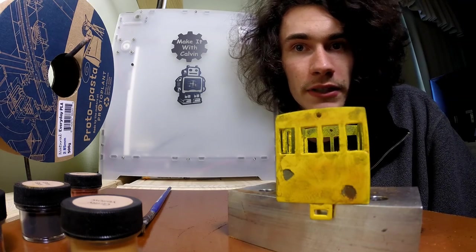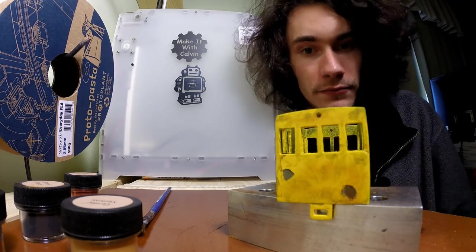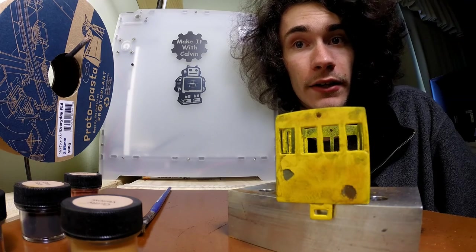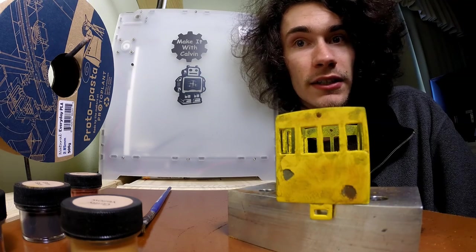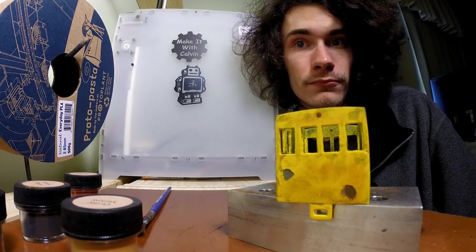So I hope you guys enjoyed this episode of Make It with Calvin. If you did, please feel free to like, comment, subscribe, you know, all that YouTuber stuff. And I will see you here next time with yet another episode of building the world's ugliest box cab locomotive. But it's kind of cool. I'll see you next time. Bye.